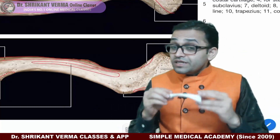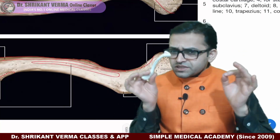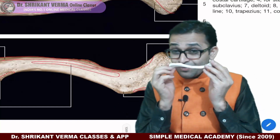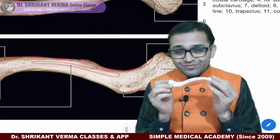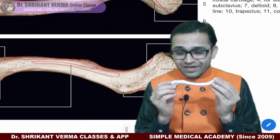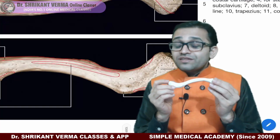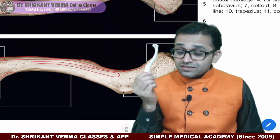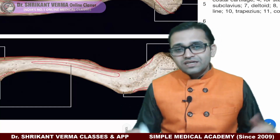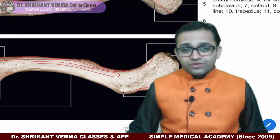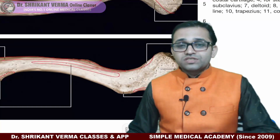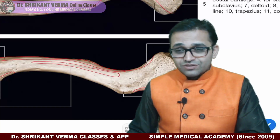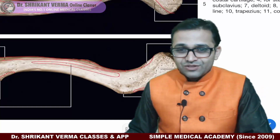In the detail class, we will cover the seven peculiarities of the clavicle, which are important MCQ and viva questions. Thank you very much for today's class, and now we are going to start the live doubt discussion.